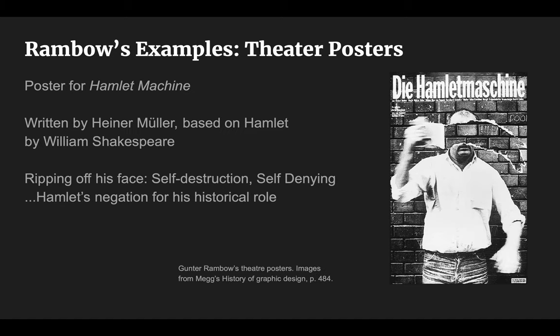In this poster for a theater called Hamlet Machine, the image of a man ripping off his face conveys a dramatic negation or self-destruction. The actual play, written by Heiner Mueller, is based on Hamlet. Hamlet is asked to be a machine to continue history, which initially he denies. However, his attempt fails and he decides to forsake his life and own will to become a machine.